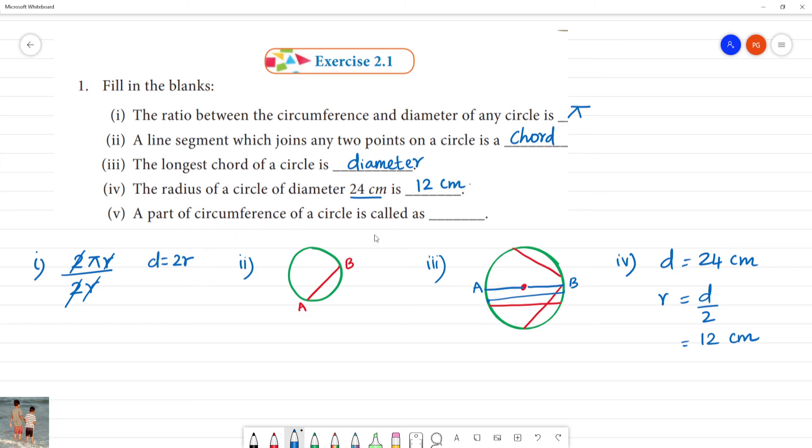A part of the circumference of the circle is called... This is the circle. A part of the circumference. So we have circle, there is one part. It is the part of the circumference. So if we use PQ, we use the arc. If we use this one, it is an arc. So a part of circumference of circle is called an arc.